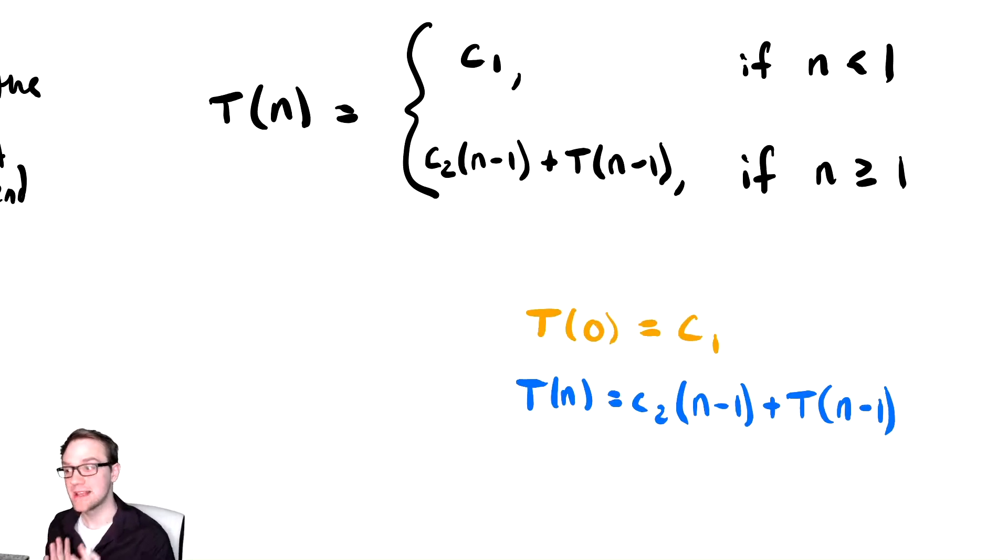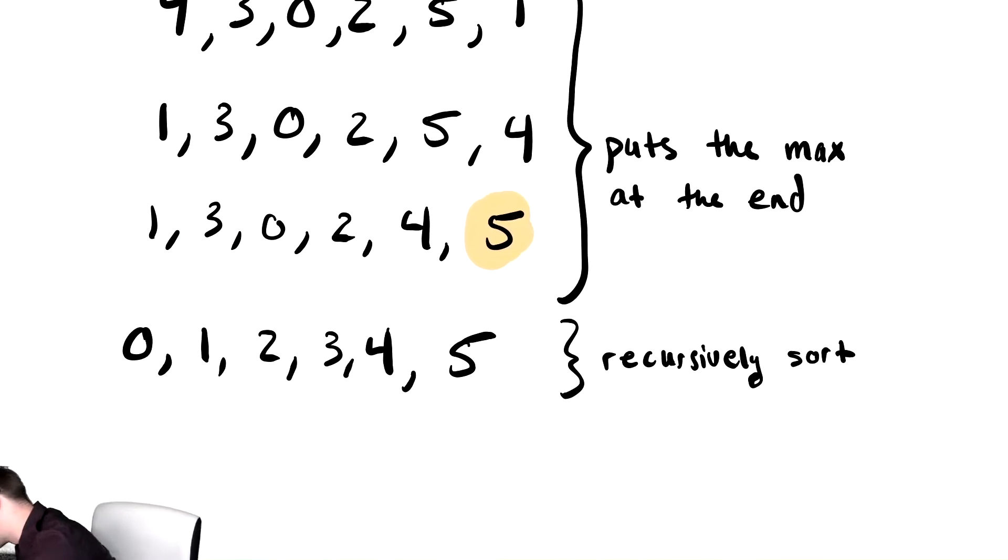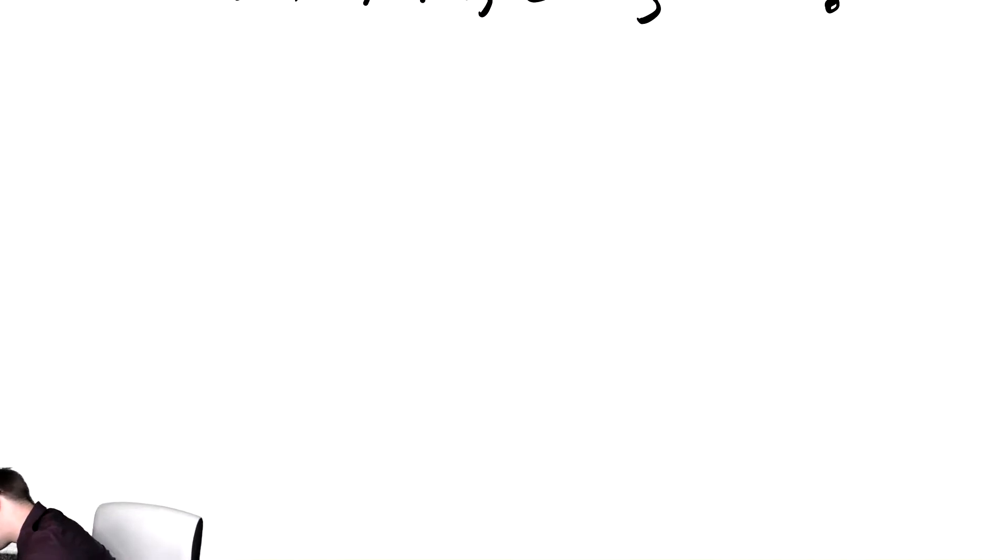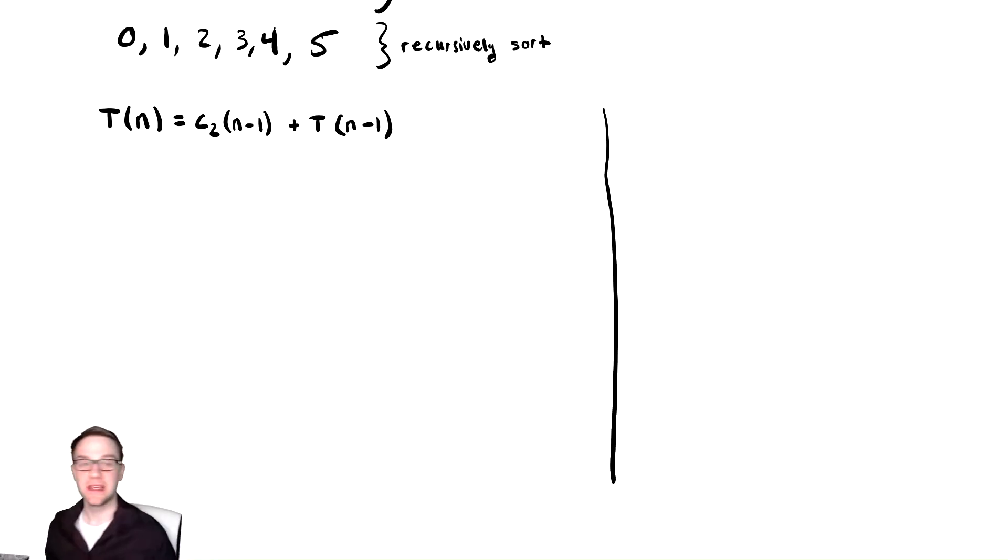Now we're going to try to repeat that same process we did before. The way I usually do this is almost in two columns. I'm going to start with my equation over here, the one I wrote in blue, and then off to the side on the right, I am going to do all those plugging in steps I did before.